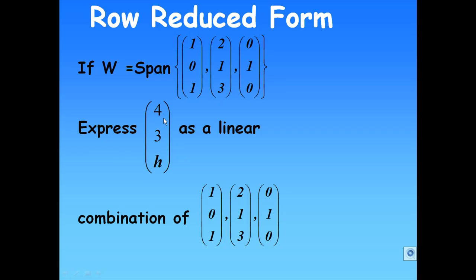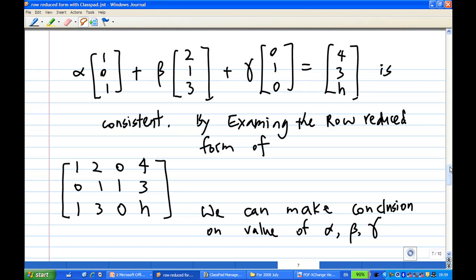We are going to express [4,3,h] as a linear combination of these three vectors [1,0,1], [2,1,3], and [0,1,0]. That means there is a number alpha times [1,0,1], plus beta times [2,1,3], plus gamma times [0,1,0], equal to [4,3,h]. We are trying to find out alpha, beta, and gamma.